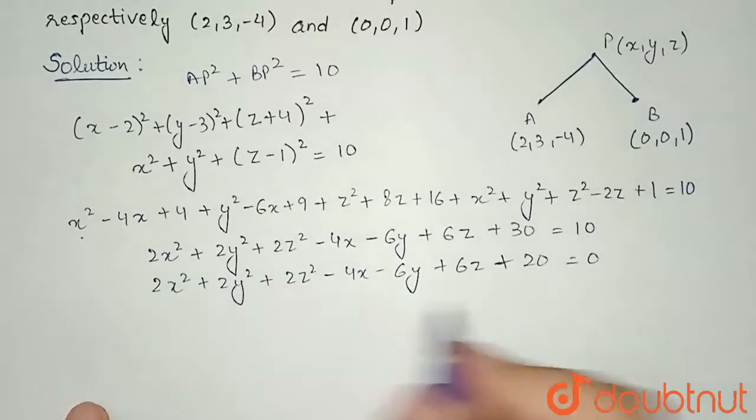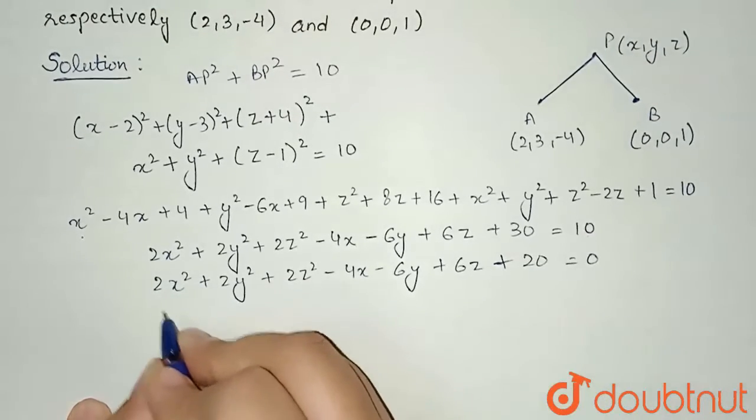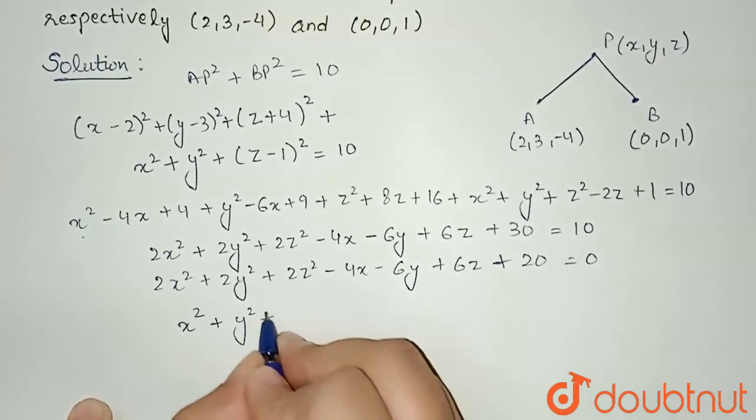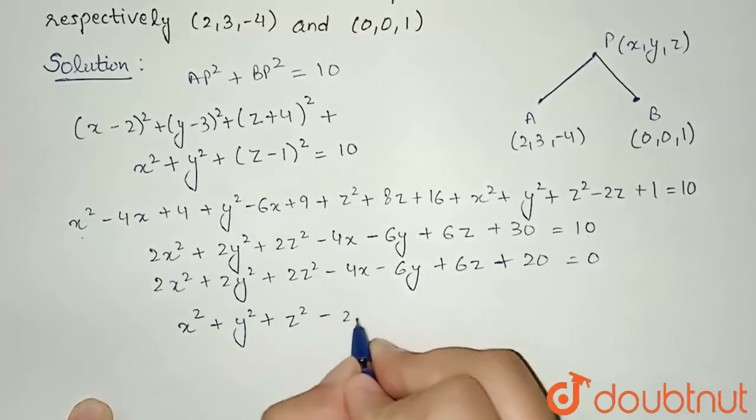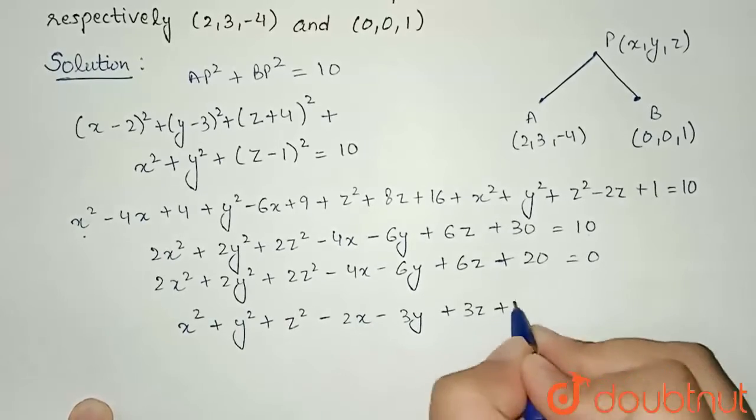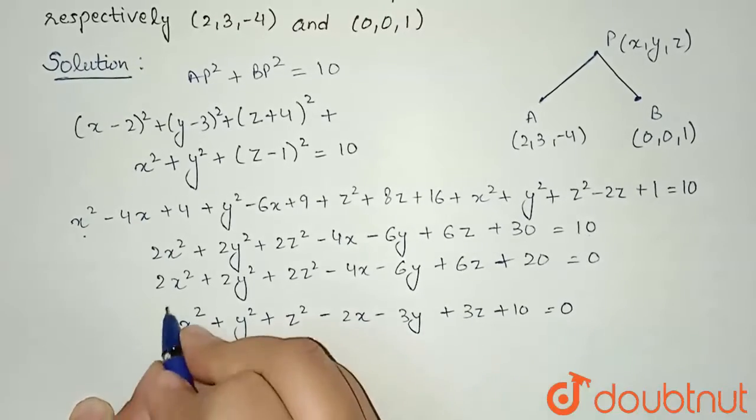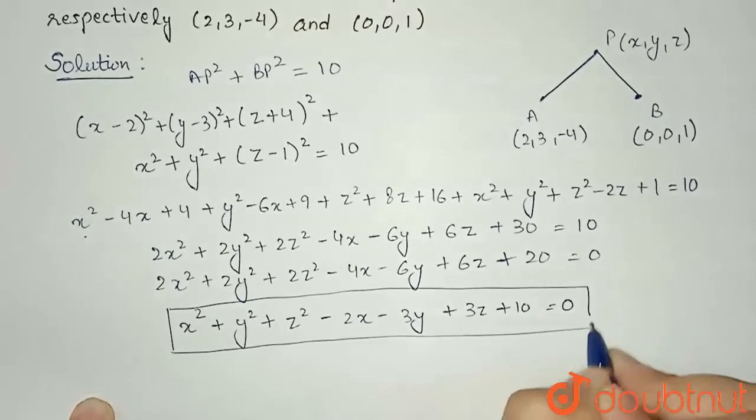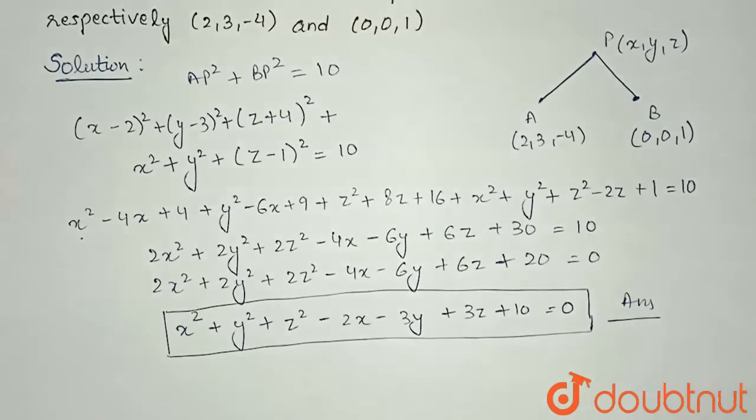We can see a common multiple of 2. So, I am dividing this equation by 2. I will get x² + y² + z² - 2x - 3y + 3z + 10 = 0. The equation which we have got, this is the locus of point P and this is my final answer. Thank you.